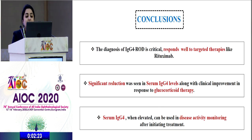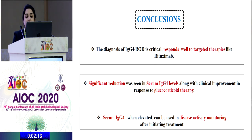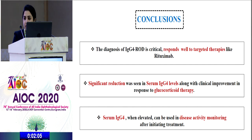The diagnosis of IgG4-related orbital disease is critical, as it responds well to targeted therapies like rituximab. Significant reduction in serum IgG4 levels was seen along with clinical improvement in response to glucocorticoids. Also, when serum IgG4 levels are elevated, they can be used for disease activity monitoring after initiating treatment.